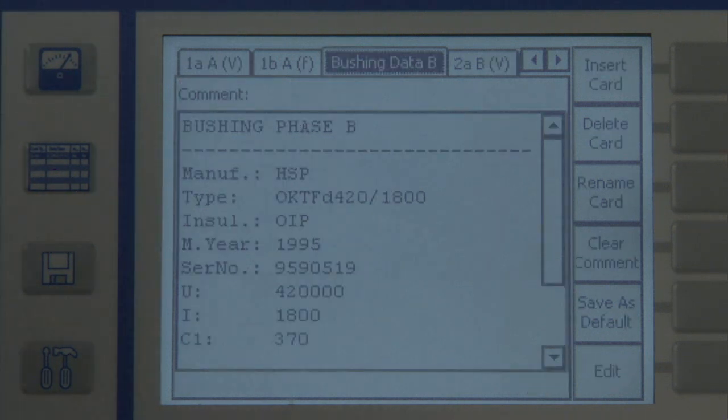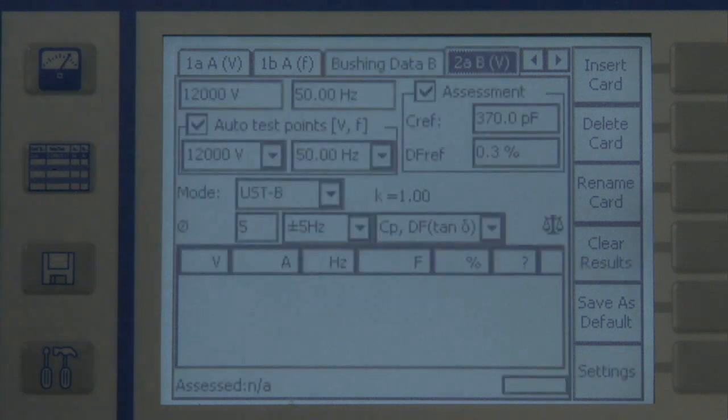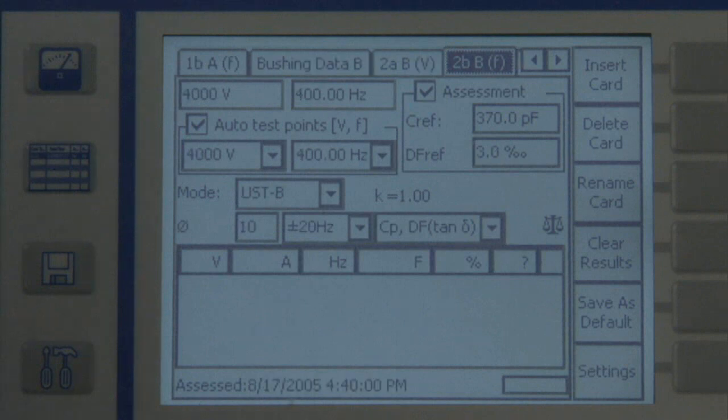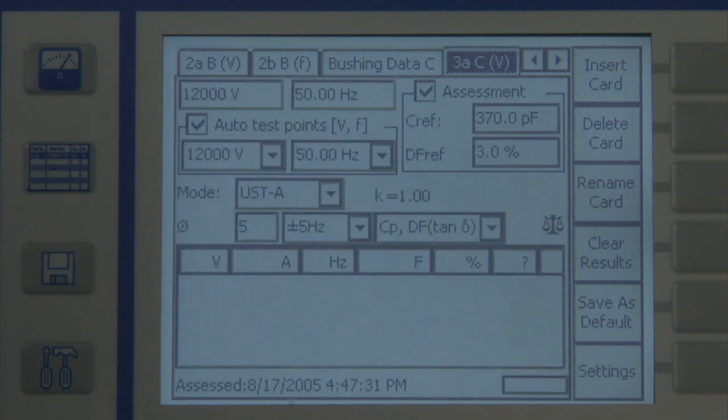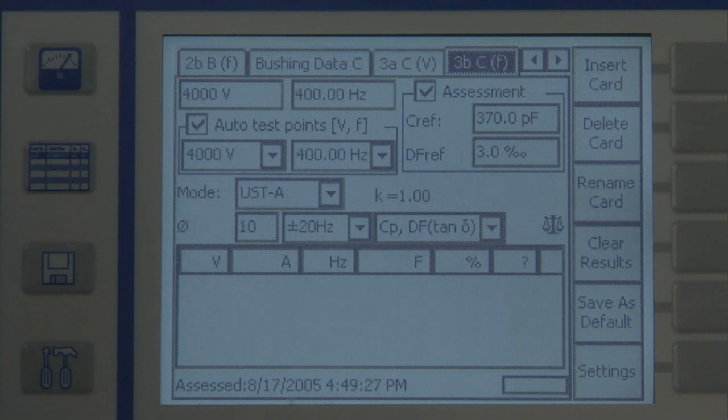Here we can see the data for the B phase bushing, again including the technical data and the prepared voltage-dependent and frequency-dependent measurement for the power factor or the dissipation factor. The template also contains data and measurements for the C phase bushing and the bushings at the neutral.